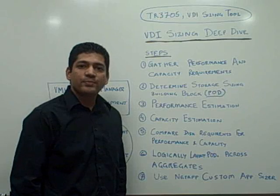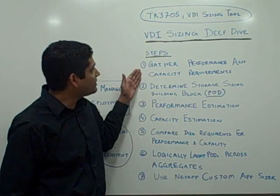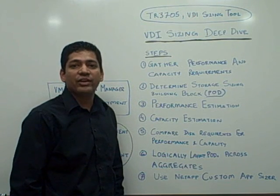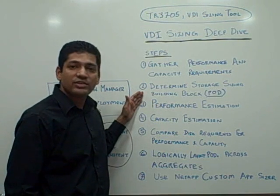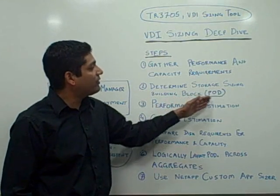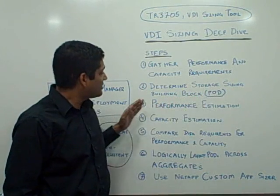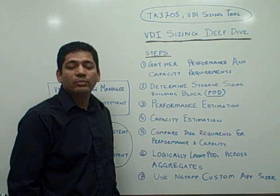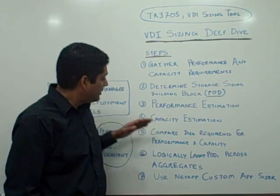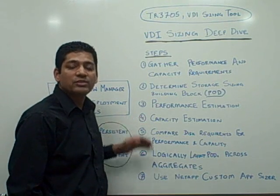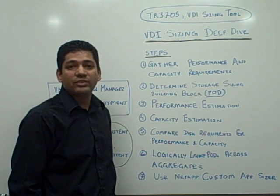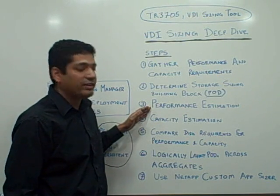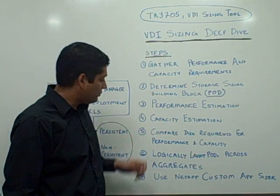Let's go over the steps involved in sizing VDI. The first step is to gather the performance and capacity requirements from the customer environment. The next step is to determine the storage sizing building block, referred to as a pod. Next is performance estimation to determine the number of spindles required to meet the performance requirement. Then capacity estimation to determine the spindles required to meet the capacity requirements, and compare the two, selecting the higher.